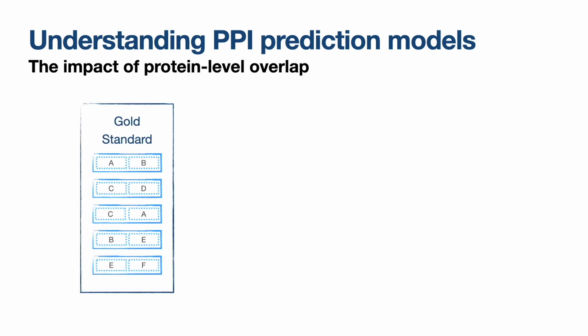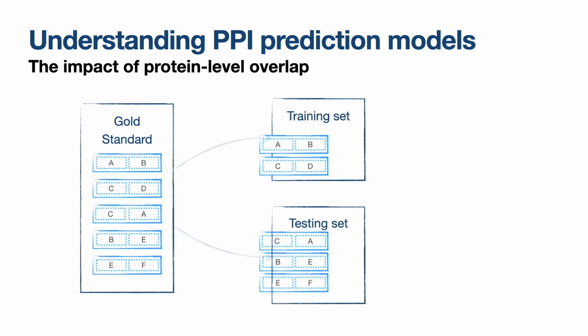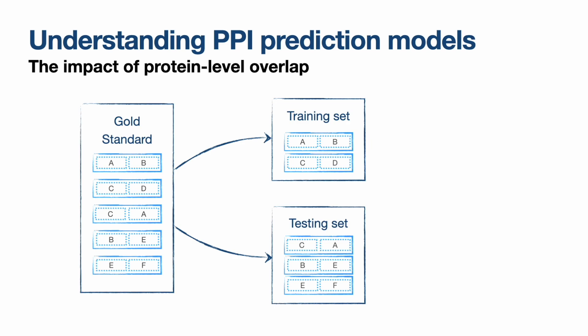Let's pause on protein-level overlap. Our gold standard is a collection of protein pairs — say A with B, C with D, C with A, etc. — and we split these between training and testing sets. We obviously don't put the same pairs in both, but since we're working with pairs of proteins, the proteins themselves can be shared between the two sets. You can either have both proteins shared (total overlap), just one, or none at all. If the algorithm can recognize a protein it has seen before, this can have serious consequences.